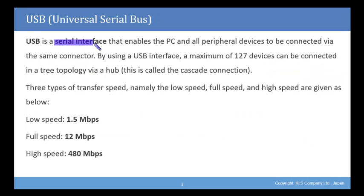USB is a serial interface that enables the PC and all peripheral devices to be connected via the same connector. By using USB, a maximum of 127 devices can be connected in a tree topology via a hub. This is called the cascade connection.